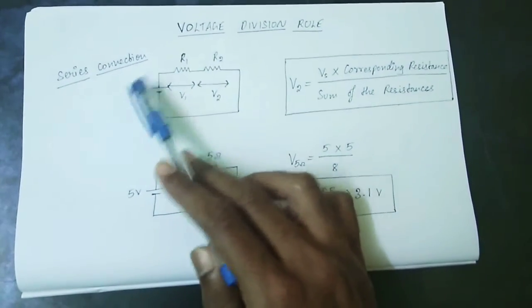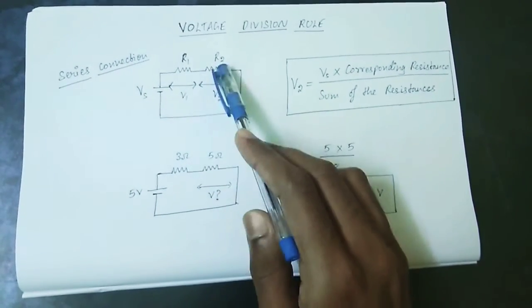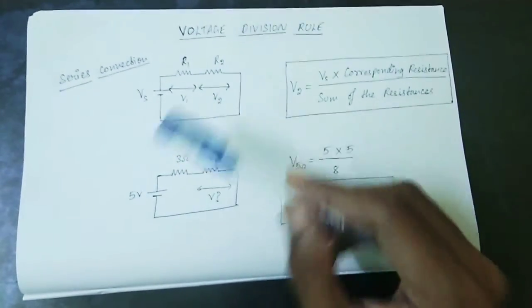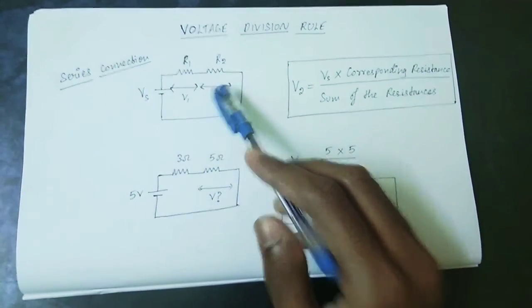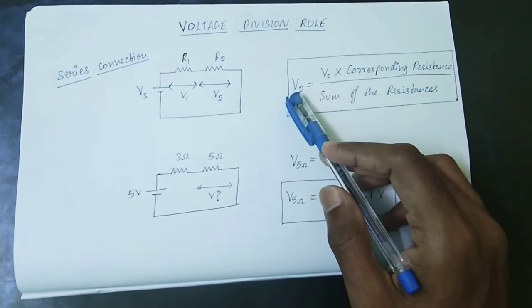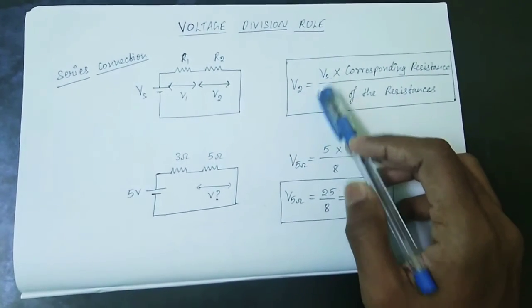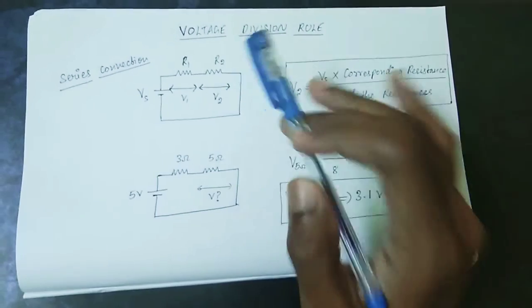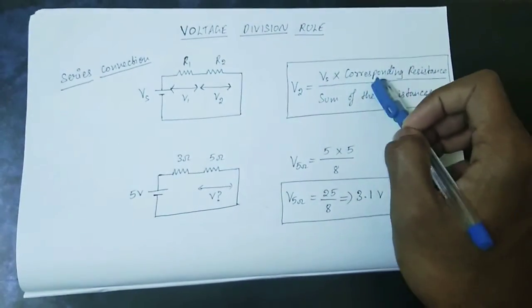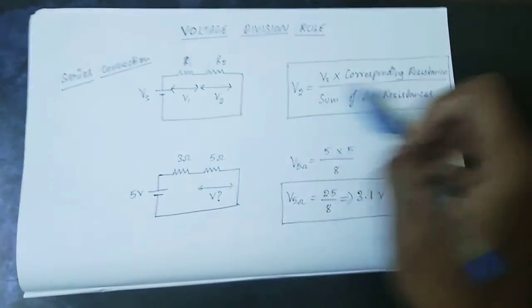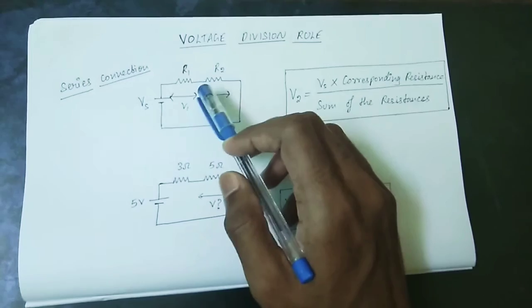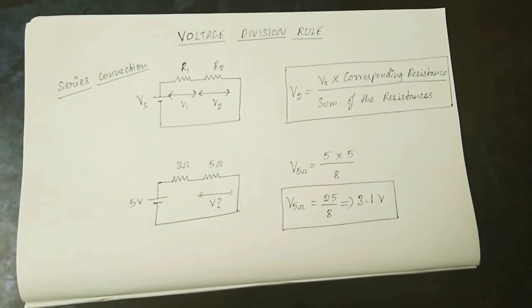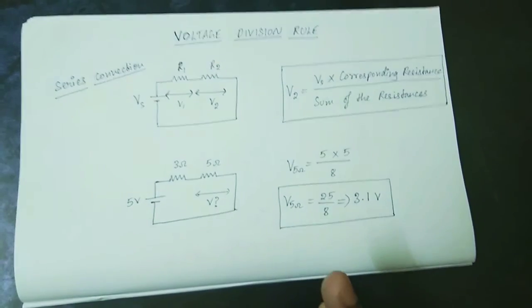R1 and R2 are in series with the voltage source. The voltage across R1 and R2 — V2 is the voltage across R2. This is the voltage division concept for a series circuit.